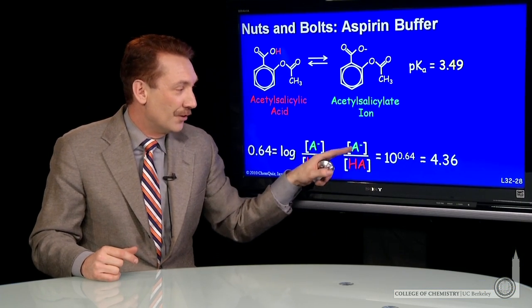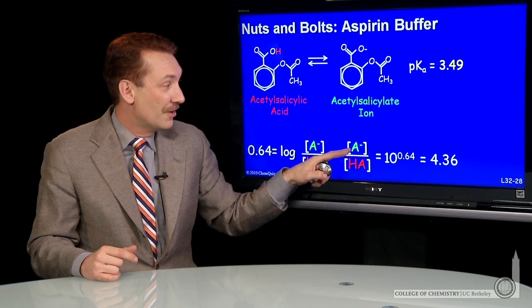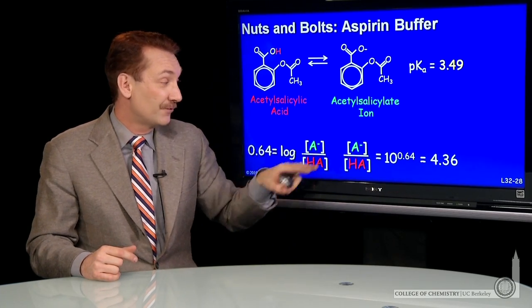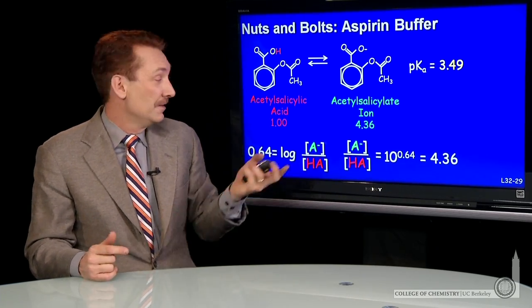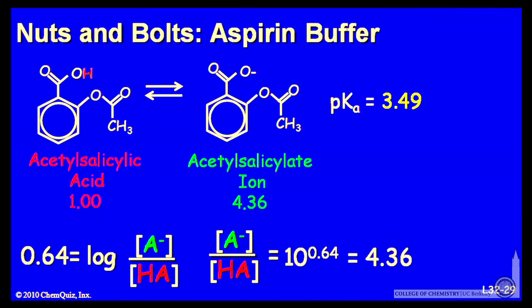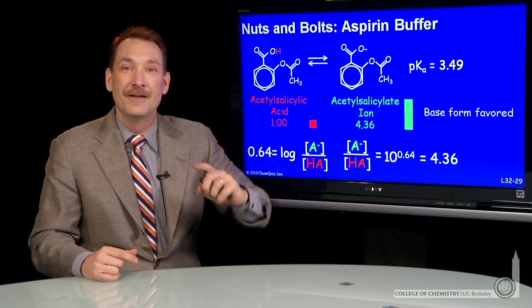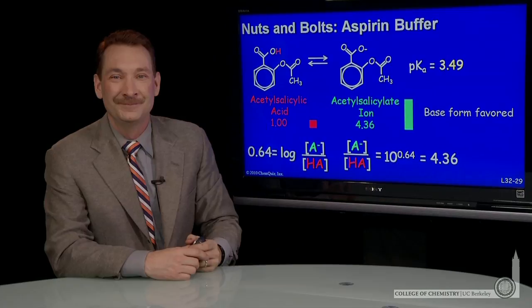So the base form over the acid form equals 10 to the 0.64, which is 4.36. The ratio of base form to acid form is 4.36 — there's about four times as much base form as acid form. For every one acid form, you'd have about four of the base form — not quite 10 to 1, as we predicted. So 1 to 4.36: the base form slightly predominates because the pH is slightly above the pKa.